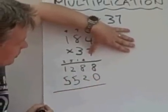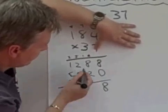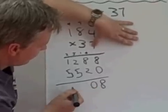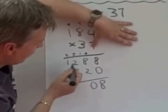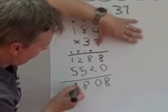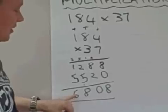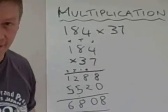If I now add those two numbers together, then that gives me eight add nothing is eight, eight add two is ten, carry the one, five plus two is seven, plus one is eight, five add one is six. So, the answer to this question is 6,808.